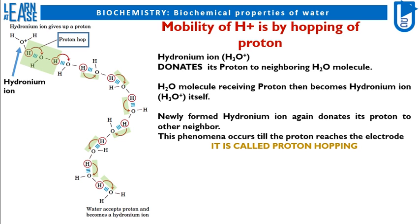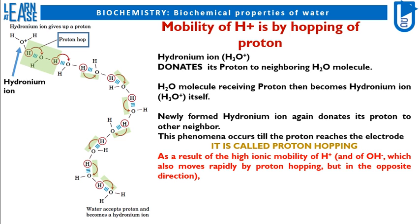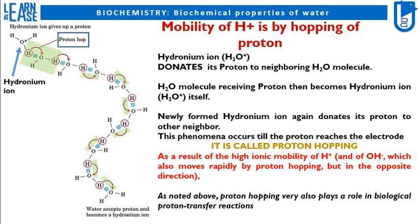This phenomenon is called proton hopping. As a result of the high ionic mobility of H plus, OH minus also moves rapidly by proton hopping but in the opposite direction. Proton hopping also plays a role in biological proton transfer reactions.